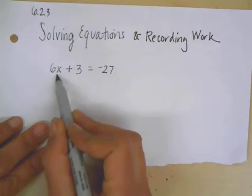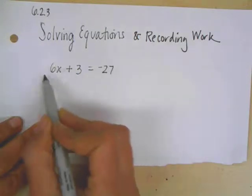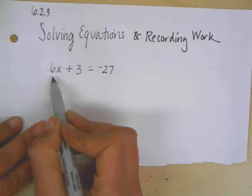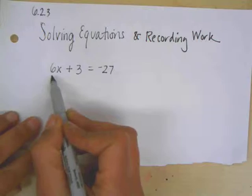So I can see right now I have a combination of a variable and a constant, so I'm going to want to get rid of the constant so that I just have the x.